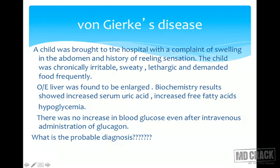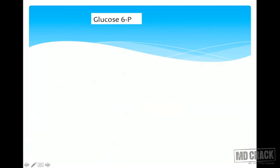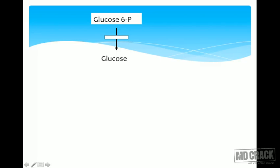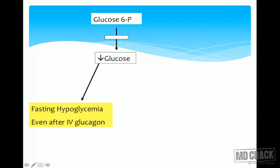Von Gierke's disease is Type 1a glycogen storage disorder. The defective enzyme is glucose-6-phosphatase. Without this enzyme, glucose-6-phosphate cannot be converted to free glucose. This results in fasting hypoglycemia — particularly neonatal fasting hypoglycemia — as the liver cannot release glucose into the blood even during glycogen breakdown.